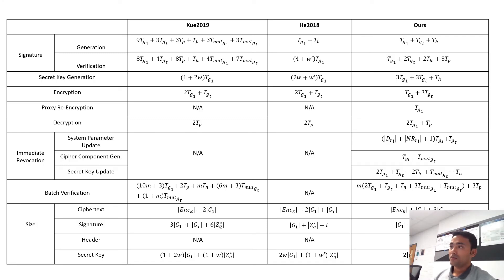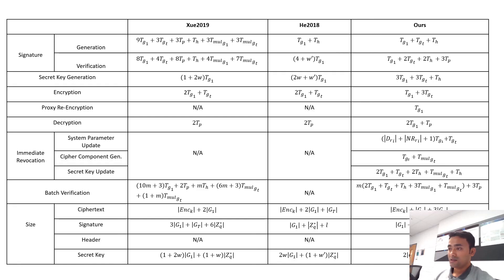This is the computation, communication, and storage overhead comparison table. We have compared our scheme with two notable works, as these two works support most of the essential functionalities like ours. The computation cost comparison is done in terms of cryptographic operations such as hash, pairing, and exponentiation operations. The communication and storage overhead comparison is done in terms of group element size. We have considered different phases such as signature and secret generation, encryption, proxy encryption, decryption, immediate revocation, and batch verification phases. The ciphertext, signature, header, and secret key sizes are considered to compare storage and communication overhead. We can see from the table that our scheme performs better than the other two schemes.